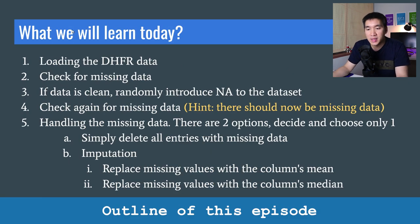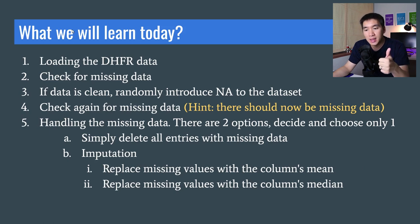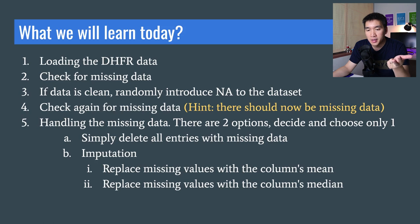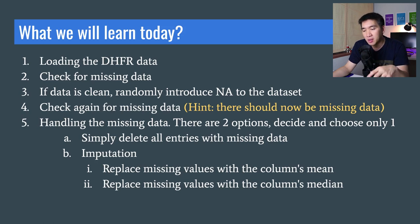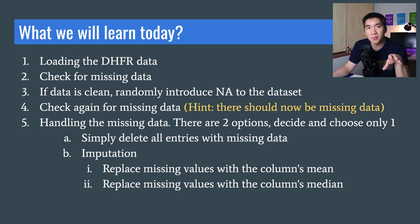Here is an outline of what we will learn today — there will be a total of five steps. Step one: load the DHFR dataset directly from the Data Professor GitHub. Step two: check for missing data — we'll soon find that the data is clean. Step three: create a function to randomly introduce missing data. Step four: check again for missing data. The first option for handling it is to simply delete all entries with missing data, though this reduces your sample count.